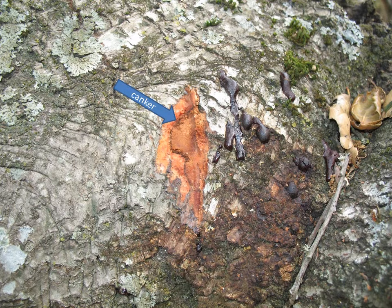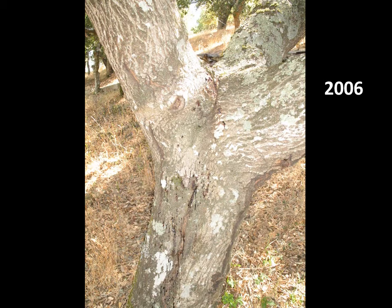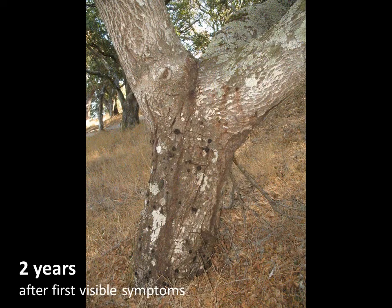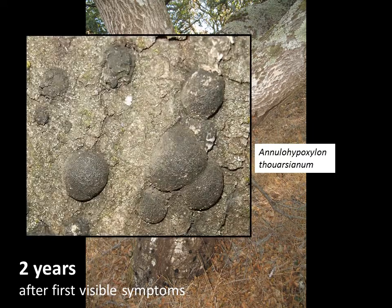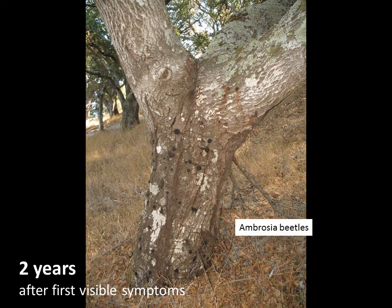The canker is the area killed by the pathogen and is visible on the outside in the area between the arrows. The canker continued to expand, and as is typical among trees with sudden oak death, the older part of the canker was attacked by the sap-rotting fungus Annulohypoxylon thorsianum and several different species of ambrosia beetles.